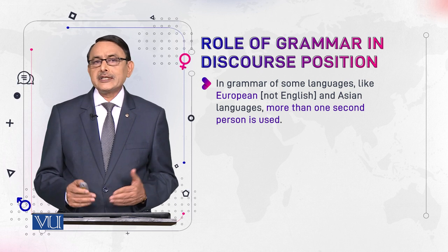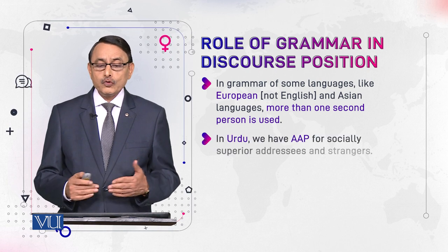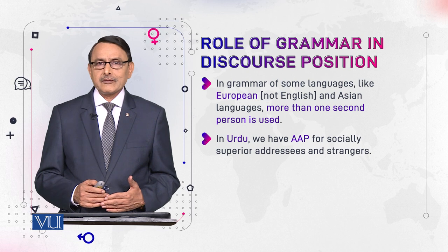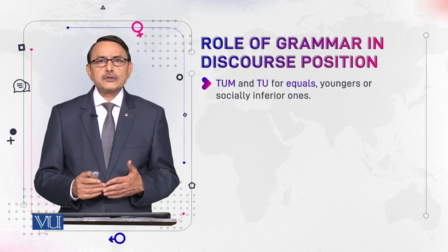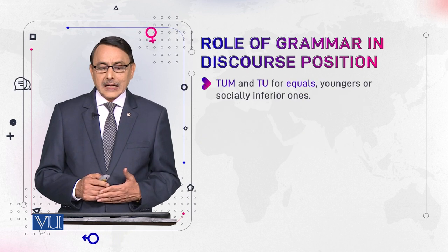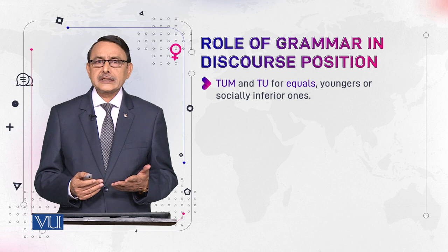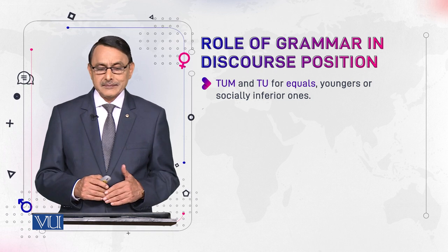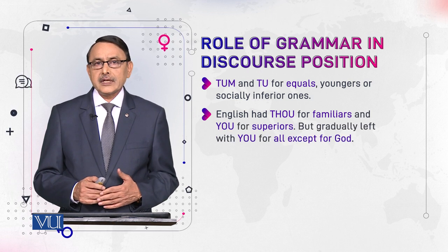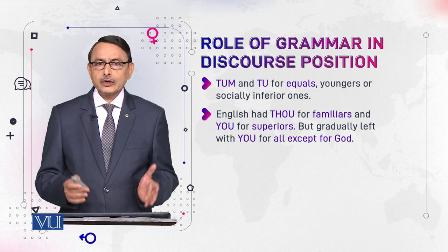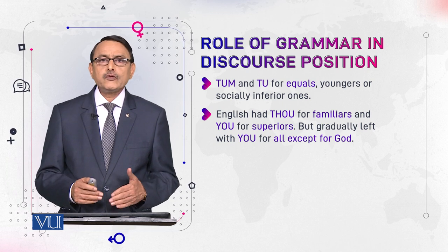More than one second person is used, and you are very well aware of that. In Urdu, we use 'aap' for seniors and elders, and for equals and friends we use 'tum' or 'tu', so we have two second persons — one for seniors and elders, and one for juniors and equals. Old English also had two second persons: 'thou' and 'you' — 'thou' for familiars and equals, and 'you' for superiors.